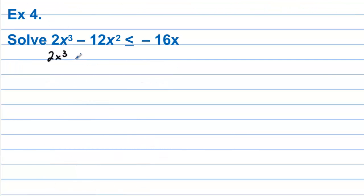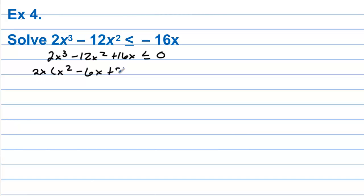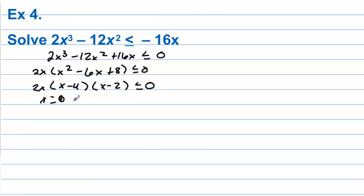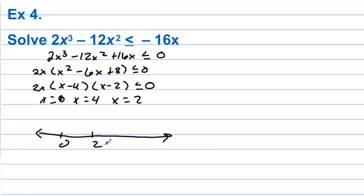Example 4: Let's get everything to one side and compare to 0, so we have plus 16x is less than or equal to 0. Let's factor out a 2x — we get x squared minus 6x plus 8. And we can still factor this into (x minus 4)(x minus 2), so we have 2x(x minus 4)(x minus 2) is less than or equal to 0. The zeros are x equals 0, x equals 4, and x equals 2. Let's put these values on a number line: 0, then 2, then 4.